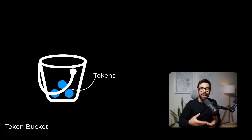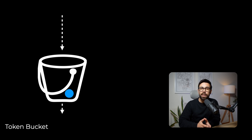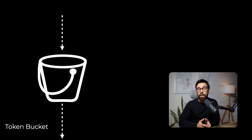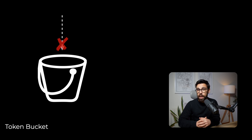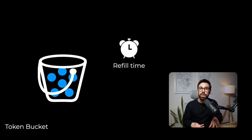The same happens with this algorithm. You have a bucket full of tokens — each token is like a ticket that allows a request to go through or not. When a new request comes in, we check if there are still tokens in the bucket. If so, the request is allowed to be processed. If the bucket is empty, the request is dropped. Eventually, according to the refill time and frequency, the bucket receives tokens again based on the refill size, and incoming requests can grab a token and proceed.